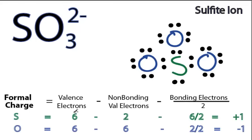For the sulfur on the periodic table, it has 6 valence electrons. We have here on the Lewis structure, 2 non-bonding. And then these right here are all involved in bonds. So 6 over 2. 6 minus 2 minus 6 over 2 is a positive 1 for the central sulfur.